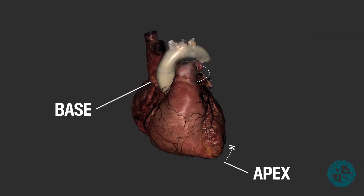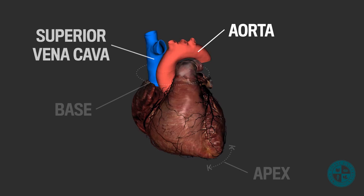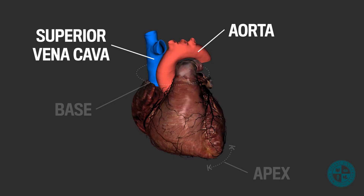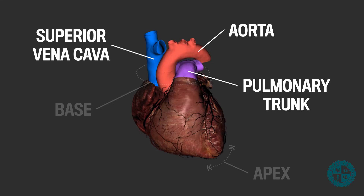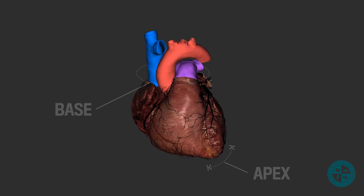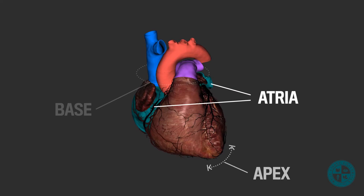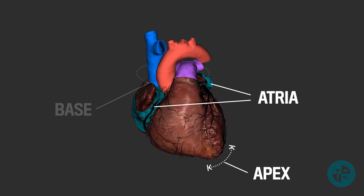Starting at the base, we first see the major arteries and veins coming off superiorly. Here's the aorta, the superior vena cava, and the pulmonary trunk. As we move down, we can see the two atria, and then as we move towards the apex, we will have the two ventricles.